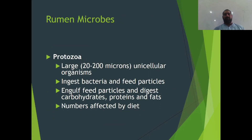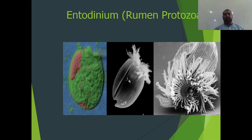Now we will see which microbes are found in the rumen. One of them is protozoa — these are unicellular organisms. They ingest bacteria and feed particles and digest carbohydrates, proteins, and fats. The number of protozoa are directly affected by the feed we are offering to the animal. This is a picture of a rumen protozoa — Entodinium.